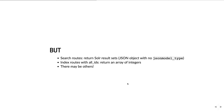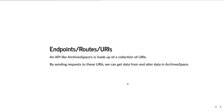In general, most things return as JSON model, but you have to know what a route returns, which is why you consult the API documentation. Endpoints, routes, and URIs are essentially what the API is made up of — a collection of URIs that you can GET, POST, and DELETE to in order to control all of ArchivesSpace. 'Endpoints' is the term used in the backend itself when defining these and is the most technically correct term.